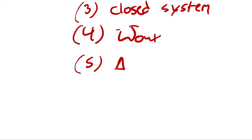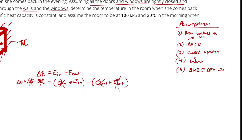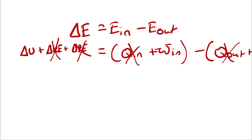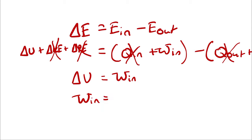You might think the fan is changing the kinetic energy of the air — and it is — but all of that change in kinetic energy is happening internally, inside our system. The system as a whole, the average kinetic energy of the mass of air in the room, is not changing. So that means delta U is equal to the work entering. I can write this as m2·u2 minus m1·u1, but because it's a closed system, mass cancels, leaving mass times (specific internal energy at state 2 minus specific internal energy at state 1).